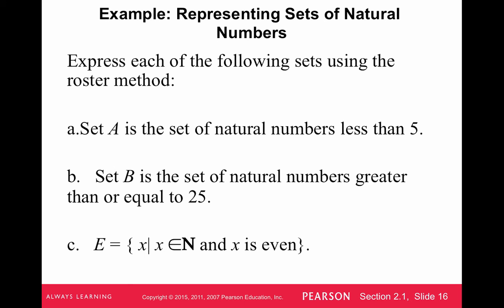So it says express each following sets using the roster method. So set A is the set of natural numbers less than 5. So that's just going to be 1, 2, 3, 4. When we say less than 5, we don't include 5. So 1, 2, 3, 4.